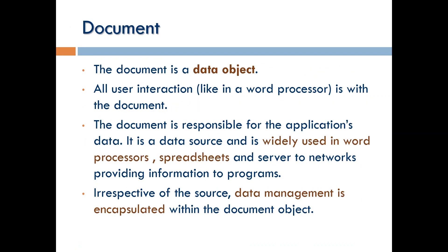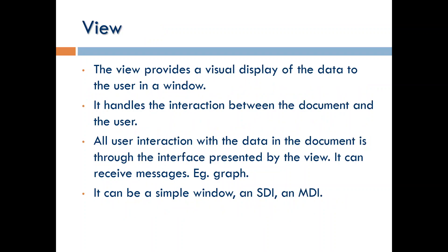A document is a data object — for example, Microsoft Word stores information in a document. You can also have spreadsheets like Excel sheets, or databases where information is stored. All these are encapsulated within a document; the document can store and manage the data. The view is the front end, interactive with the user — creating an interactive view of the document's data, such as graphs. Documents and views can be created in an SDI frame window or an MDI frame window.